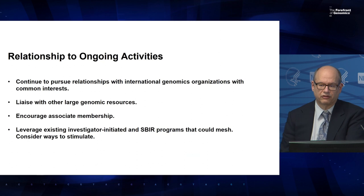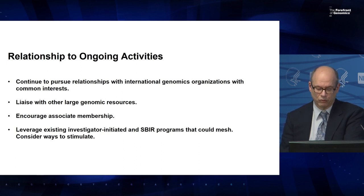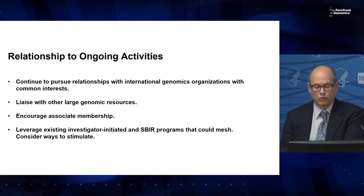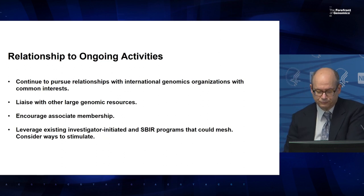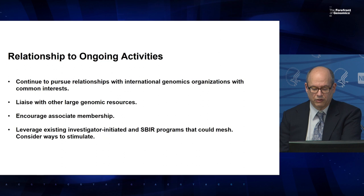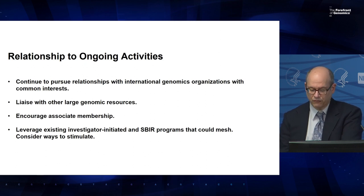It's almost impossible to list just a few things when discussing the relationship to ongoing activities, because this effort will have to be well-coordinated with lots of genomics work. The consortium will continue to pursue relationships with international organizations with common interests like GA4GH and H3Africa. The general intent is to position HGRP awardees to be leaders in developing a global community. The consortium will liaise with other large genomic resources such as ANVIL, EBI, and NCBI, and will encourage associate membership for independently funded investigators pursuing common goals. They will be expected to leverage existing investigator-initiated programs in technology development, genome assembly, pan-genome representations, and ELSI research, and we've thought about issuing a notice to stimulate some of these.